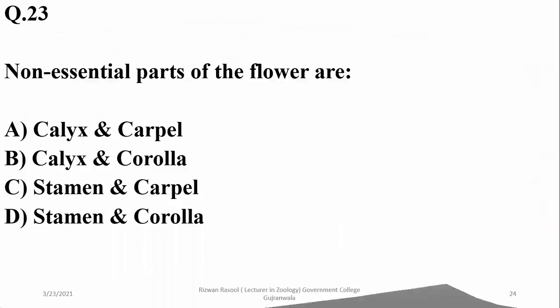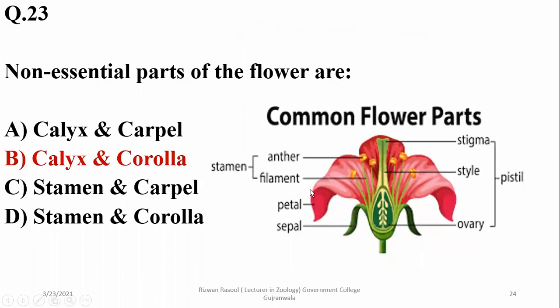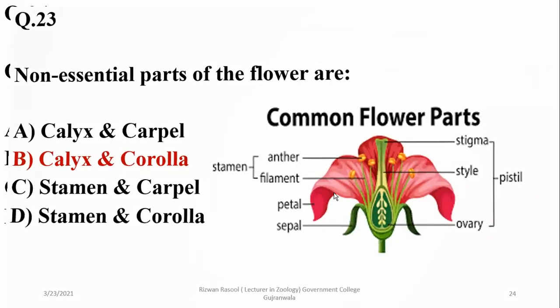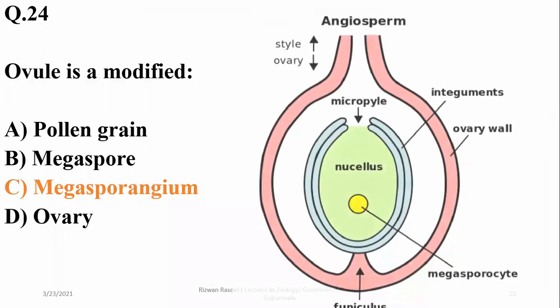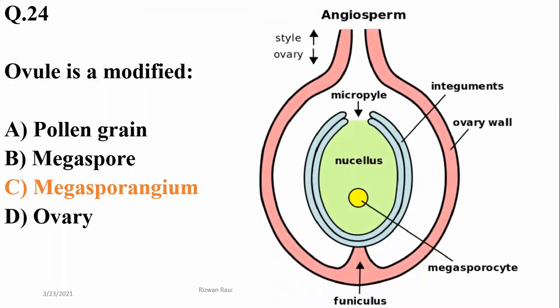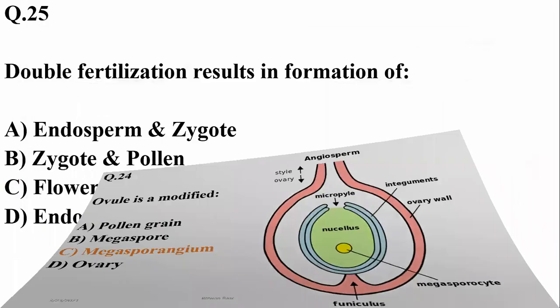The ripened ovary is termed a fruit. Non-essential parts of the flower, which do not directly participate in fertilization or pollination, are the calyx and corolla, so beta is the right option. Stamen and carpel are considered essential parts of the flower as they participate directly in reproduction.